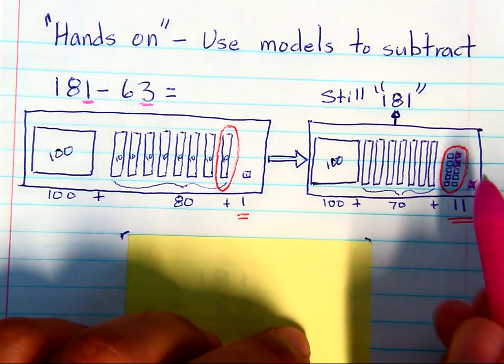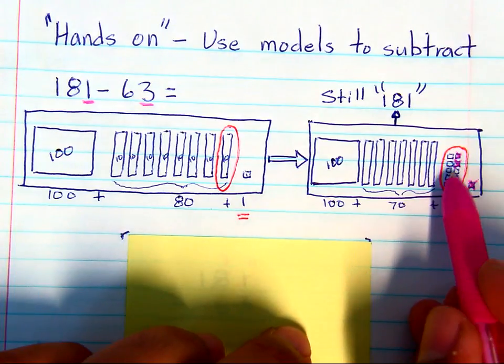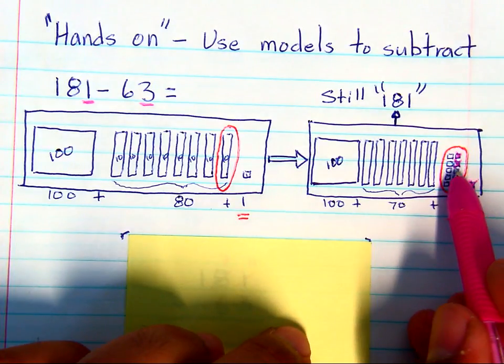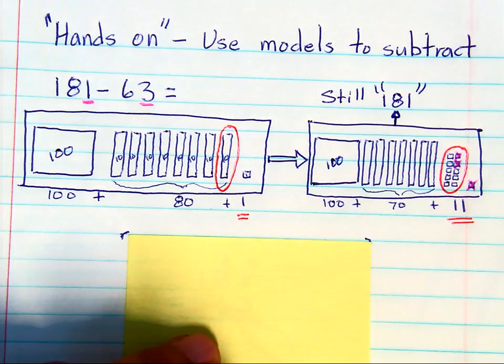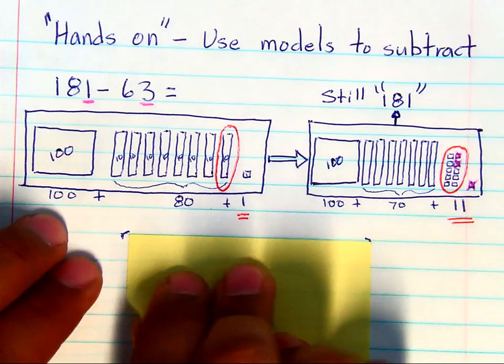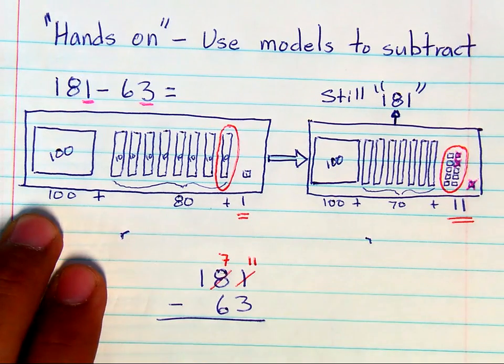And if you do that, you now have 1, 2, 3, 4, 5, 6, 7, 8 ones, 7 tens, and left with that same 100.